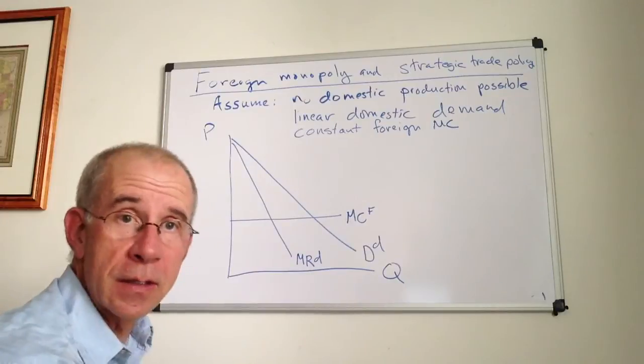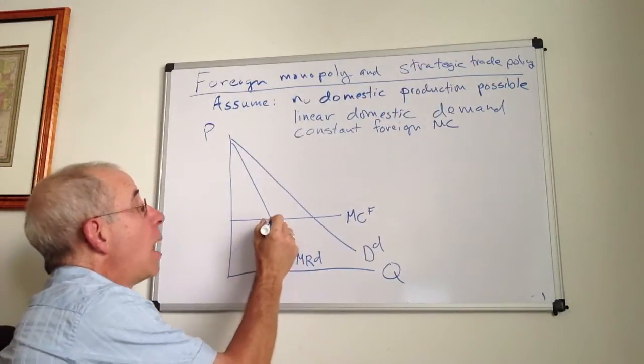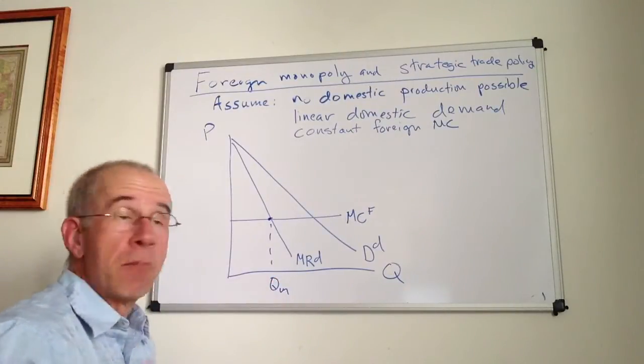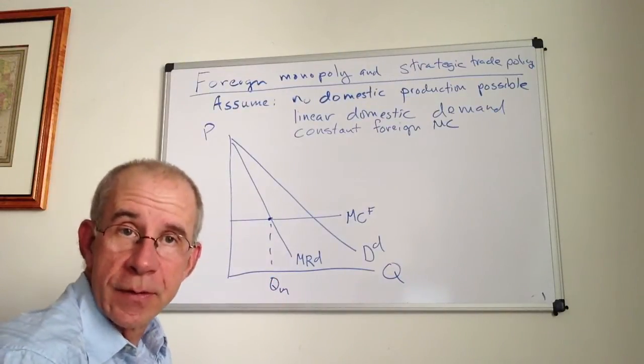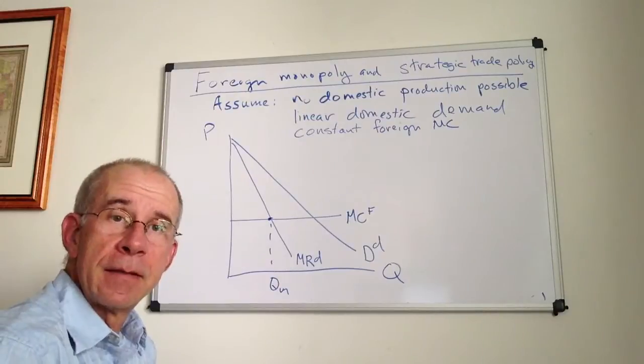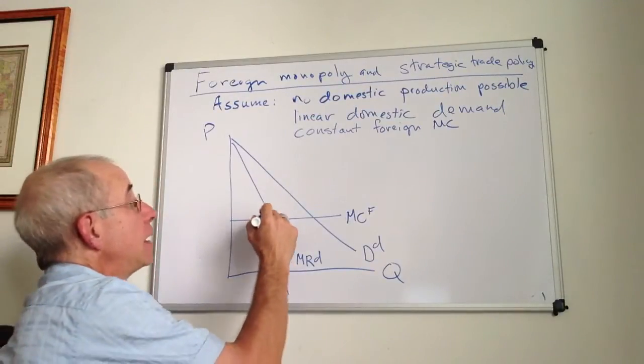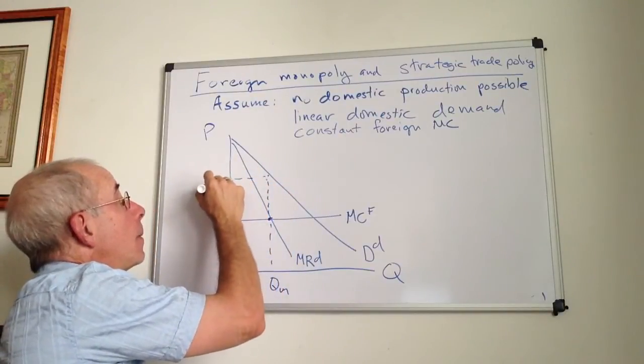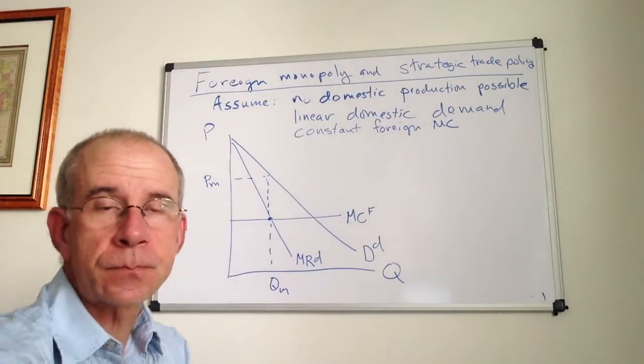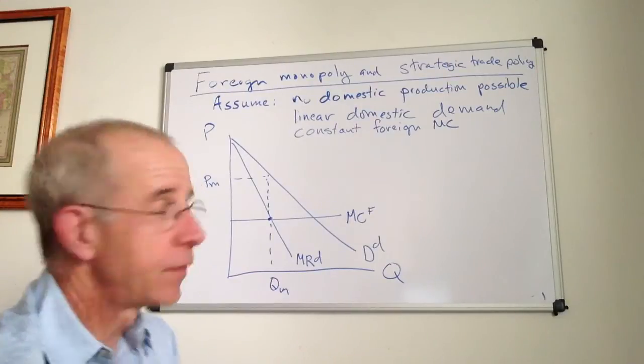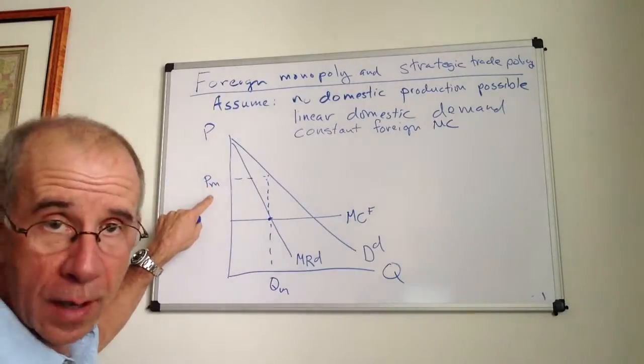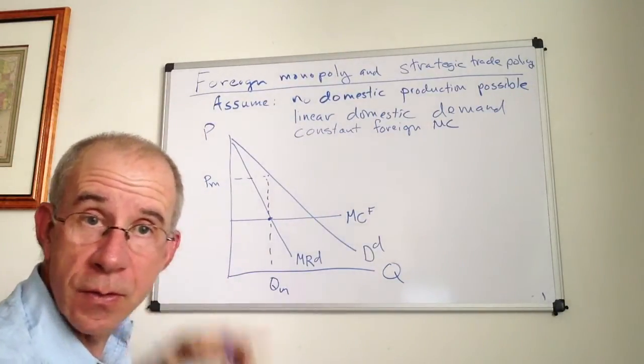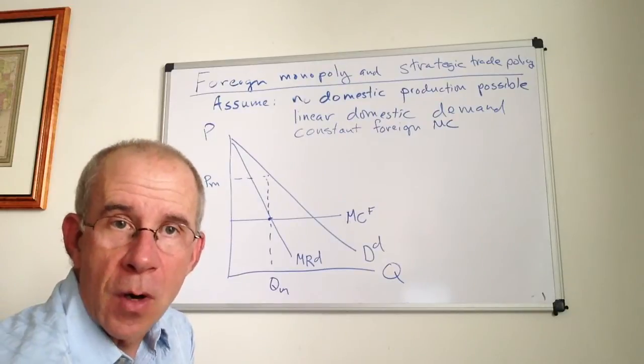So the foreign firm is going to take a look at this and say, okay, I want to pick an output such that marginal cost equals marginal revenue, and then take a look at the demand curve and see what price the market will bear. And so you have a monopoly price greater than marginal cost to the foreigners, so that there's some distortion in this market.